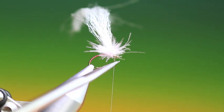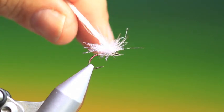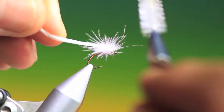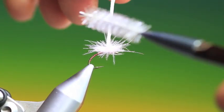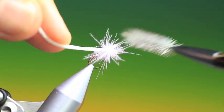Remove our tying thread. Take a dubbing brush and just brush out any trapped or folded CDC fibers for the wing.